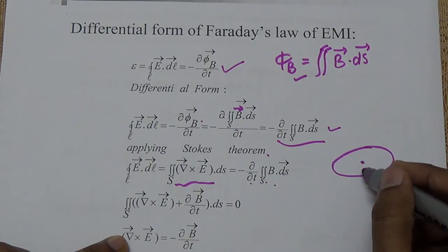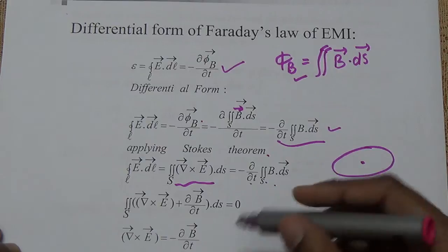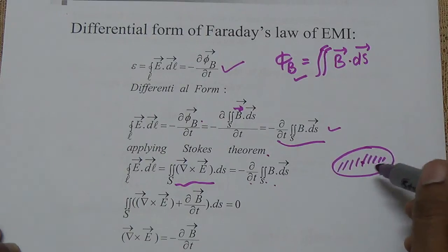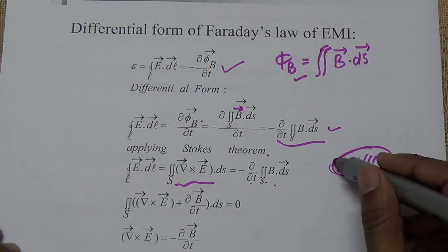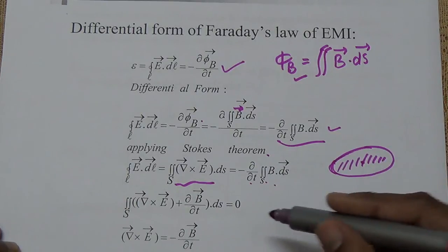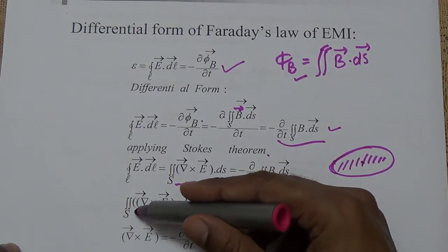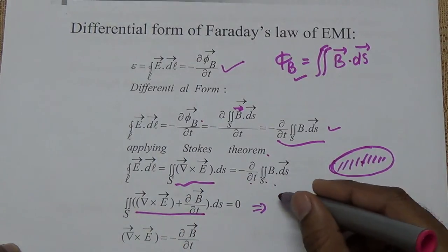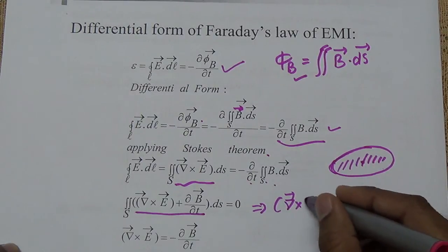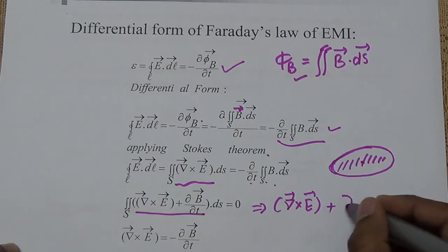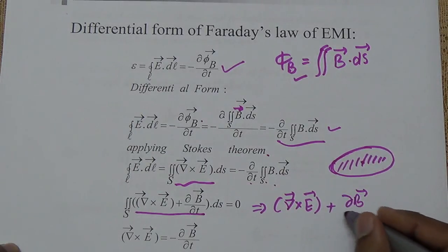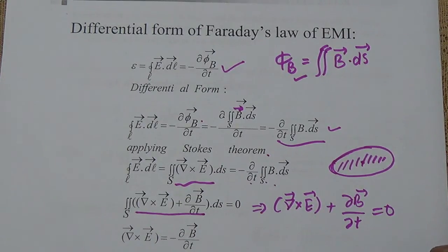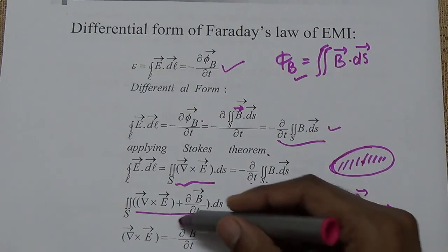Combining both sides into one surface integral: (del cross E plus del B/del t)·dS equals zero. Since the open area enclosed by the closed loop is not zero, the inner factor must be zero. Therefore del cross E plus del B/del t equals zero, giving del×E equals minus del B/del t. This is the differential form of Faraday's law.